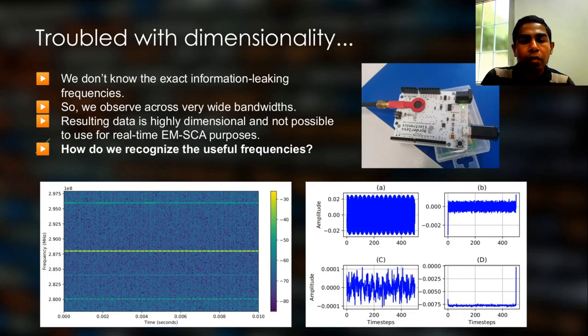But we have a problem. With each computing device having a unique information leaking frequency, we have the problem of identifying that. We don't really know the exact frequencies where information is being leaked. So the solution we have is acquiring EM data over a wide bandwidth.